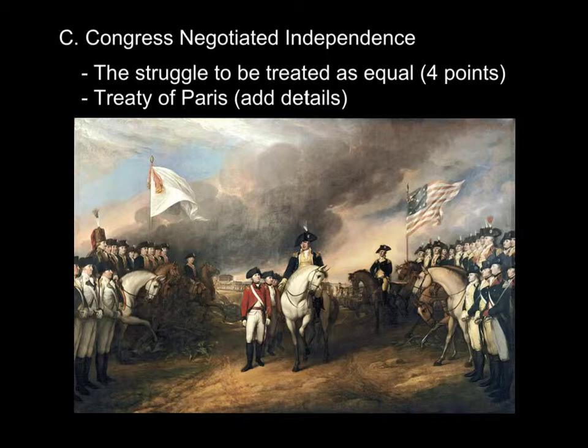Number two, they guaranteed American rights to take fish from northern waters — areas off the coast of eastern North America were open to American fishing. Number three, it gained western territorial boundaries that extended all the way to the Mississippi River, including travel along the Mississippi, so both the British and the Americans could use it for trade and travel. Now this seemed like a great solution, but there was one impediment which we will find out later.